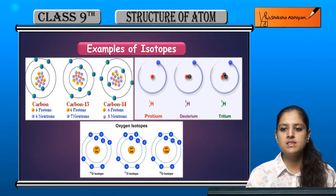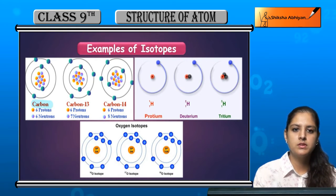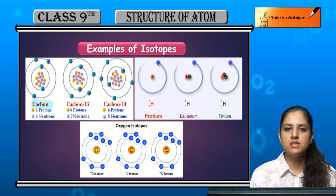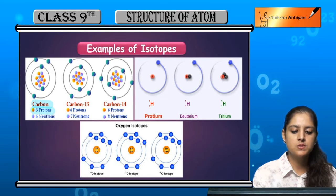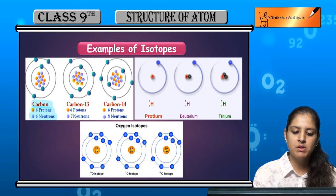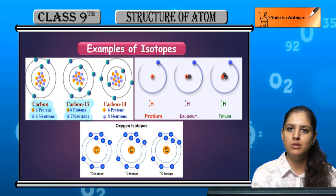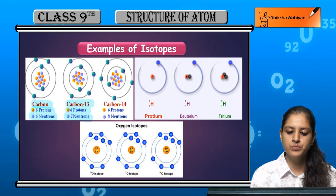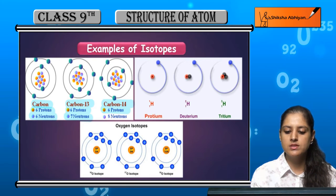There are some other examples. First is carbon — carbon exists in three forms. The first has 6 protons and 6 neutrons. The second has 6 protons and 7 neutrons, which is called carbon-13. Carbon-14 has 6 protons and 8 neutrons.